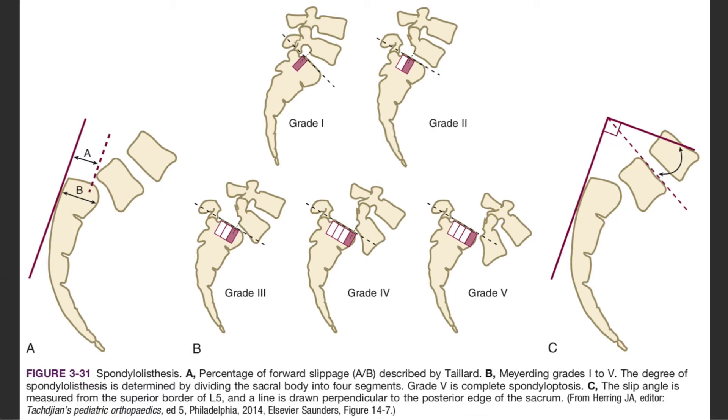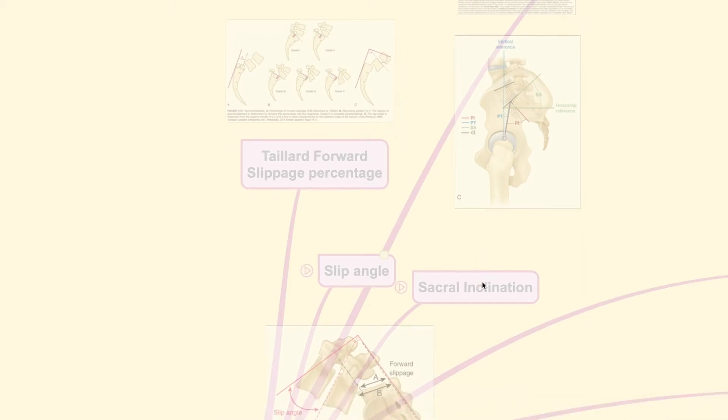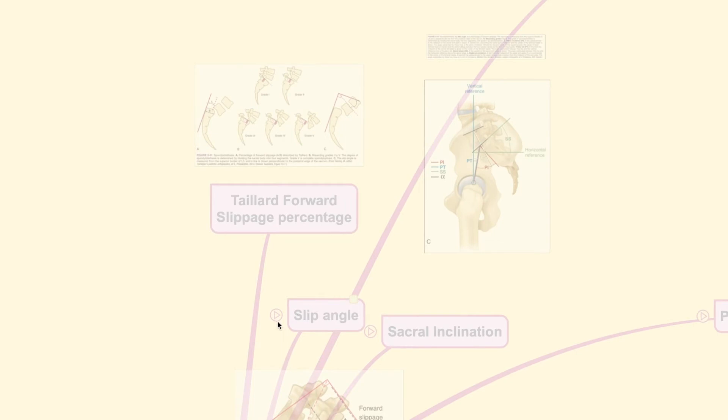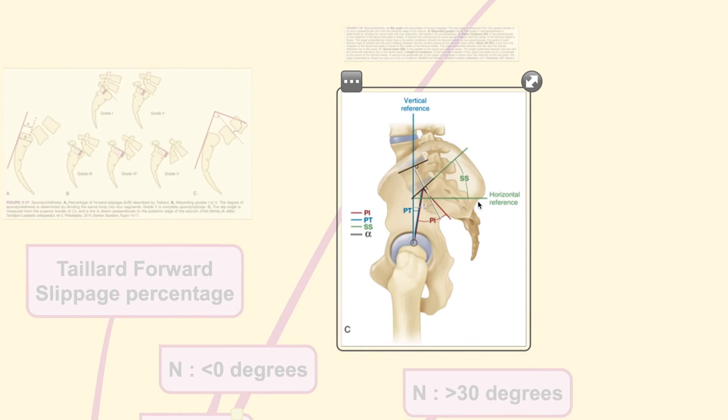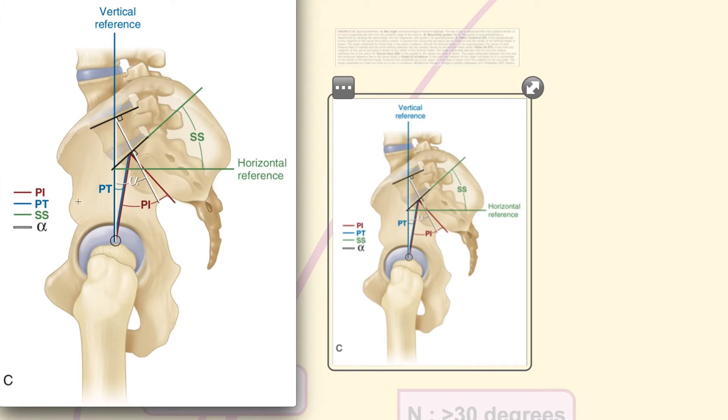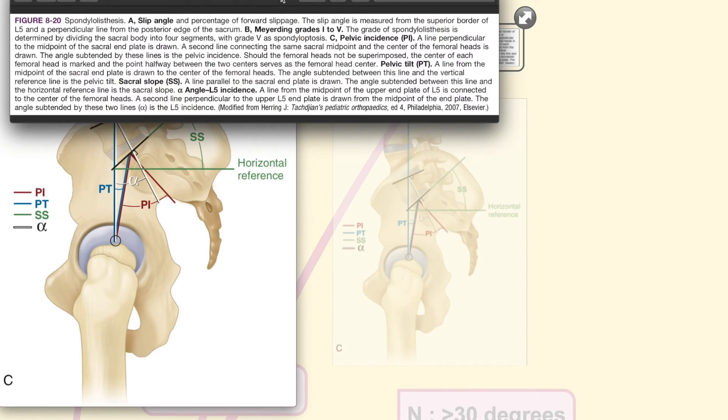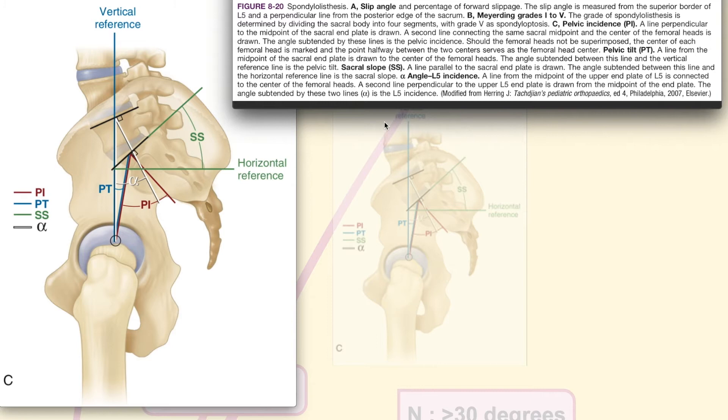Now, after knowing how to measure these values, you could classify them and determine whether or not there is any imbalance in the spine. We could see here that the slip angle is normally less than 0 degree. As for other reference lines that should be evaluated in a patient with spondylolisthesis, that would include the pelvic incidence, the pelvic tilt, and also the sacral slope. Now, I am going to show you here a summary regarding these lines.